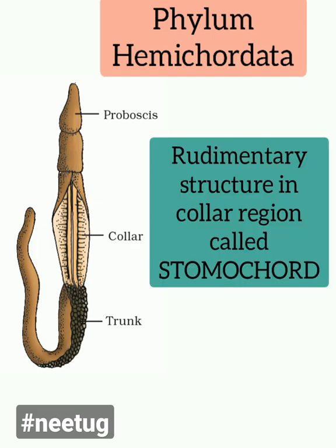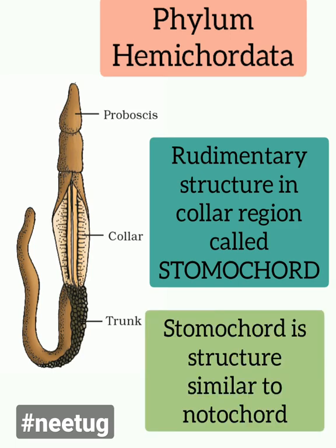Hemichordata have a rudimentary structure in the collar region called the stomochord. The stomochord is a structure similar to the notochord.